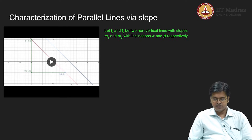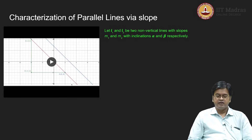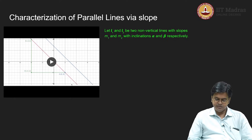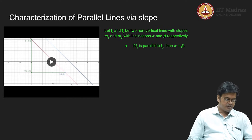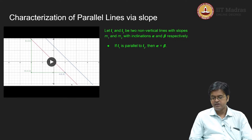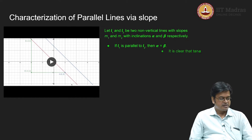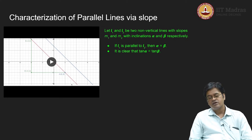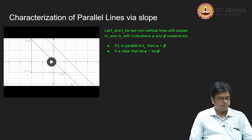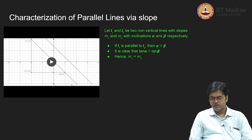Consider two non-vertical lines with slopes m1 and m2, and inclinations alpha and beta respectively. If L1 is parallel to L2, then alpha equals beta — the inclinations are the same, as we have seen in the figure. If alpha equals beta, then naturally tan(alpha) equals tan(beta). Since tan(alpha) is the slope of L1, which is m1, and tan(beta) is the slope of L2, which is m2, the slopes are clearly equal: m1 equals m2.